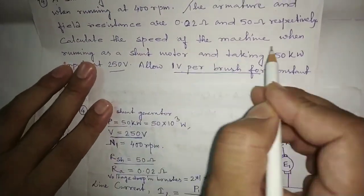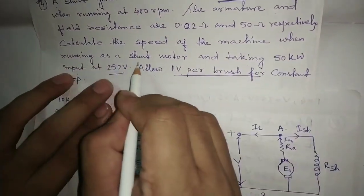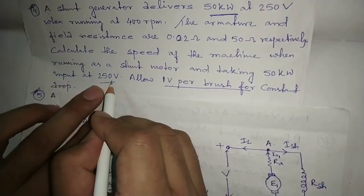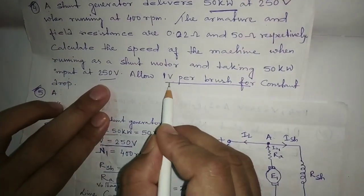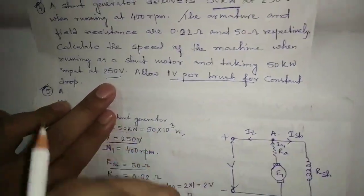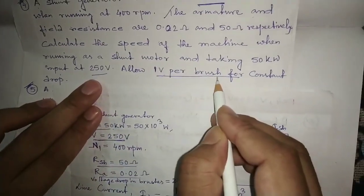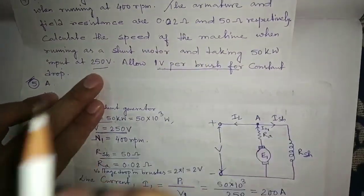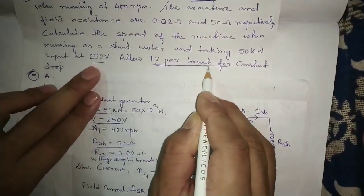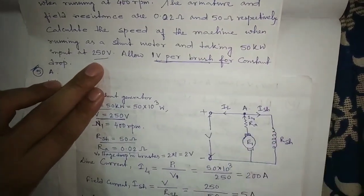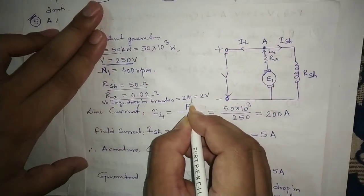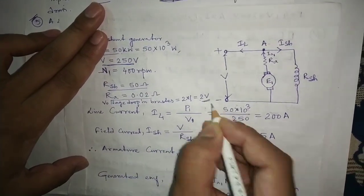We need to calculate the speed when running as a shunt motor, taking 50 kilowatt input at 250 volt. The brush drop is 1 volt per brush. There are 2 brushes, so the total brush voltage drop is 2 into 1, which equals 2 volt.